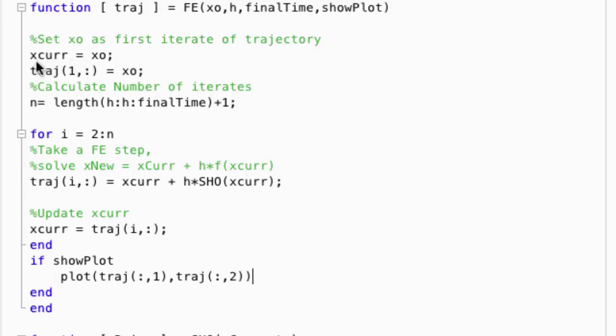The first step is just to make X current, which is a helper variable, equal to the initial condition, and make X0 the first element in the trajectory. Notice that since MATLAB starts array indexing with 1, X0 will actually be the first element in the trajectory. That is, X0 will be trajectory 1. So X1 will be trajectory 2. These off-by-1 errors can often be very confusing.